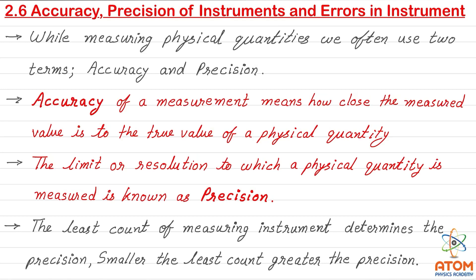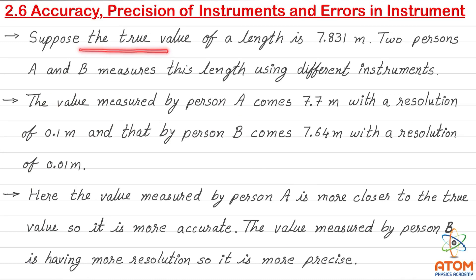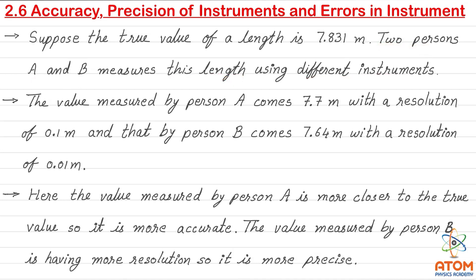Let us take an example. Suppose the true value of a length is 7.831 metres. Two persons, A and B, measure this length using different instruments. Person A measures 7.7 metres with a resolution of 0.1 metres, and person B measures 7.64 metres with a resolution of 0.01 metres.